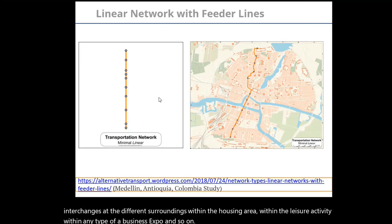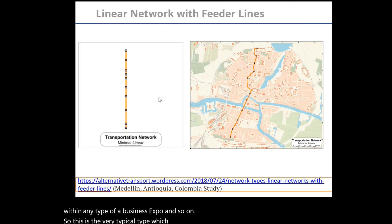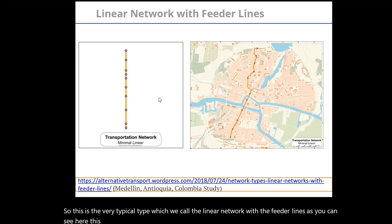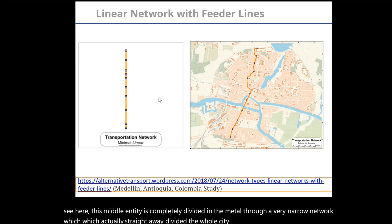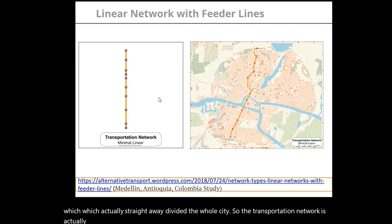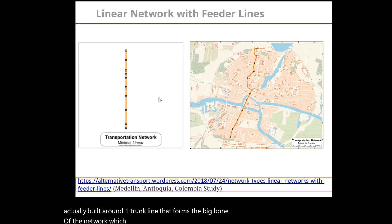This is a very typical type which we call the linear network with feeder lines. As you can see here, Medellín city is completely divided in the middle through a very narrow network that straight away divides the whole city. The transportation network is actually built around one trunk line that forms the backbone of the network, which usually plays its primary service.